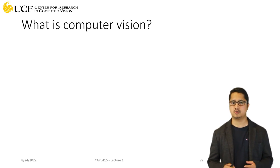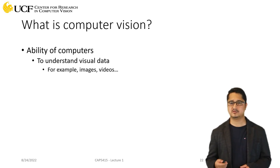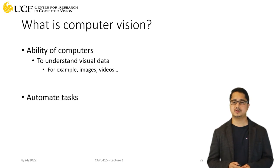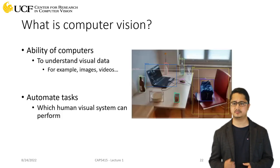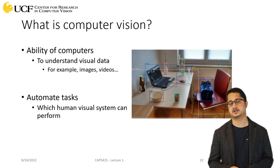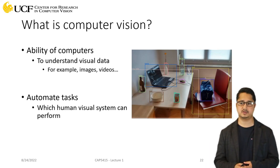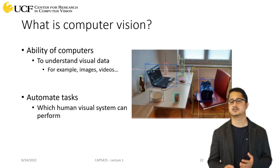Let's first try to understand what exactly is computer vision. Computer vision is the ability of computers to understand and interpret visual data. By visual data we mean images or videos where visual information is present, and with this visual information we want to automate some tasks which are actually very easy for the human visual system. For example, if we look at an image as a human we can easily identify what different objects are present — a laptop, a mug, a chair — and we can also localize where exactly these objects are in the image. In computer vision, we want computers to solve these kinds of problems automatically.